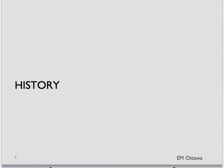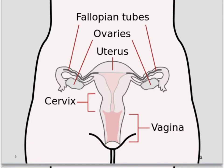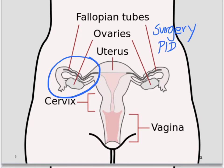Who should we worry about for ectopic pregnancy? There are a few risk factors that we might be able to gain from history. As a general rule, anything that disrupts the transport of the egg into the uterus will increase the risk of it being fertilized in the tube. Therefore, the risk factors include any scarring of the tube from surgery, a previous pelvic inflammatory disease, and a previous ectopic pregnancy with or without surgery.